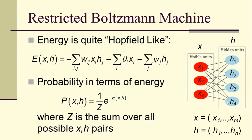A restricted Boltzmann machine has an energy which is very Hopfield-like. We let X denote the Xi values of the visible units, and H be the Hsub J values of the hidden units. The energy of a set of X values and a set of H values jointly is the negative sum over IJ Wsub IJ Xsub I Hsub J, minus the sum over I theta sub I Xsub I, minus the sum over J Psi sub J Hsub J.